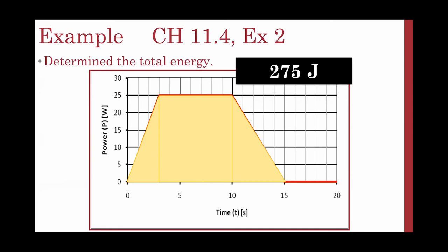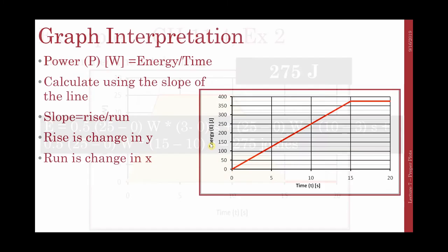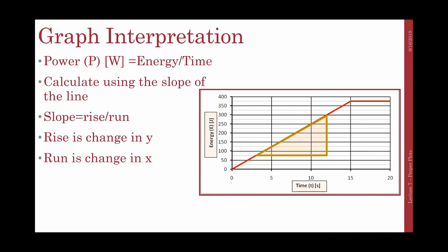I can make it into 3 triangles and a rectangle, which gives 275 joules. That was calculated using the height of my first triangle, plus the height of my rectangle, plus the height of my second triangle. Since power is energy over time, I can calculate the power using the slope of my line. The slope is rise over run — the change in y over the change in x. So if I have a graph of energy versus time, I can calculate the slope to find my power.